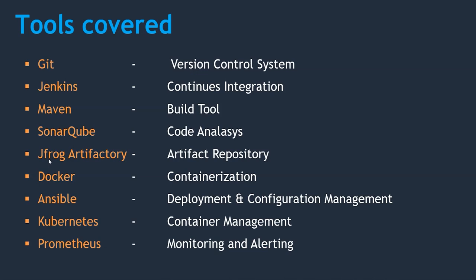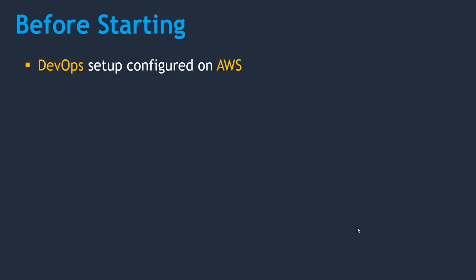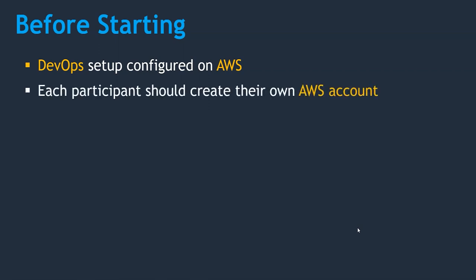If you don't know any of these tools, don't worry — you are going to understand them going forward. Before starting your journey with me, I'd like to highlight a few points. All these DevOps tools are set up and configured on AWS Cloud, so you should have some AWS knowledge. If you already have AWS skills, well and good. If not, I am going to teach whatever is required. Each participant should create their own AWS account, and I will show you how to create a free tier AWS account.